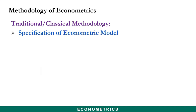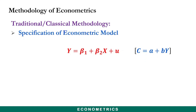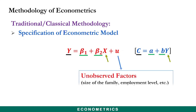After specifying the mathematical model, you specify the econometric model of the form: Y = β₁ + β₂X + u. Comparing this with the mathematical model, Y represents consumption, β₁ and β₂ represent A and B from the consumption function, and X represents income. The additional term u represents unobserved factors — other variables that can also affect consumption but are not included in the model, such as family size and employment level.